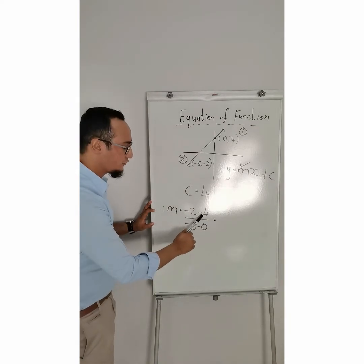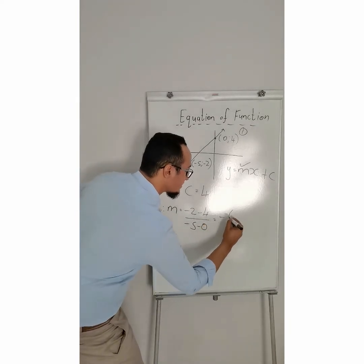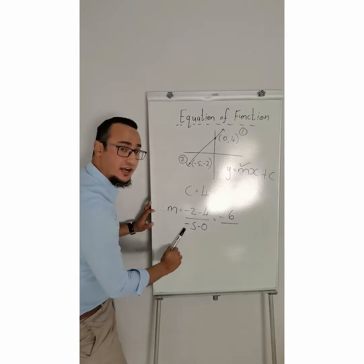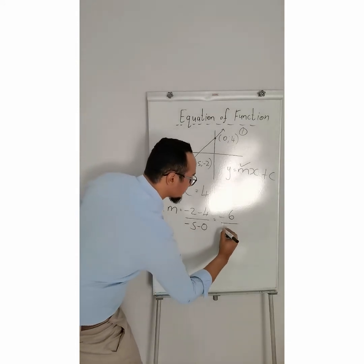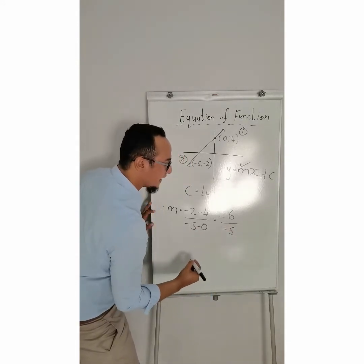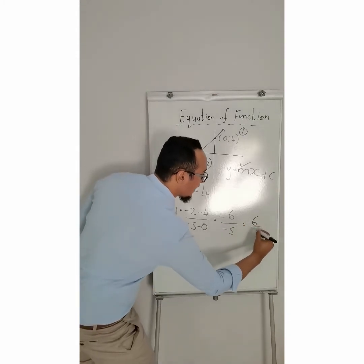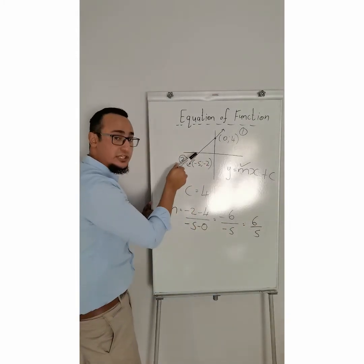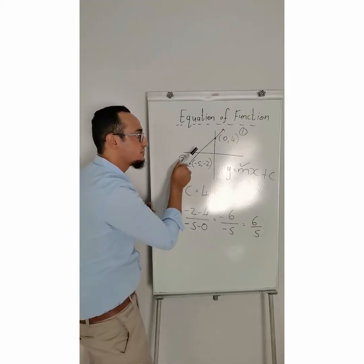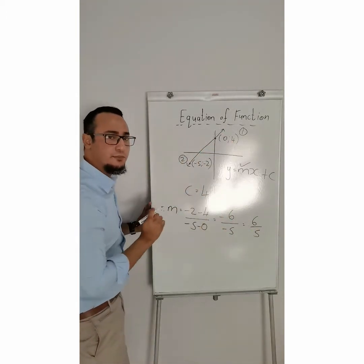Minus 2 minus 4 is equal to negative 6, and minus 5 minus 0 is equal to negative 5. Notice how the negative divided by negative will be equal to a positive, and if I look at my line, it's going in a positive direction, which means my gradient has to be positive.